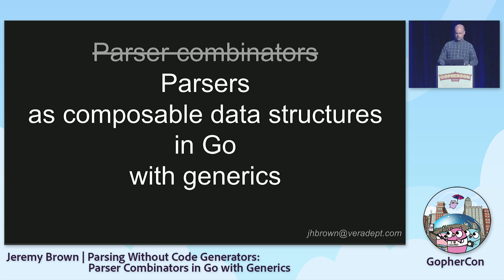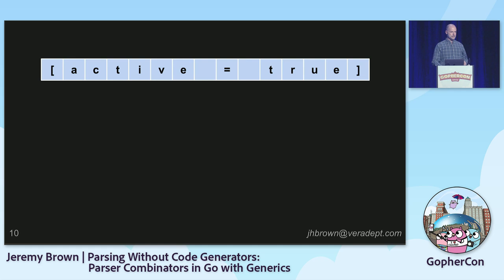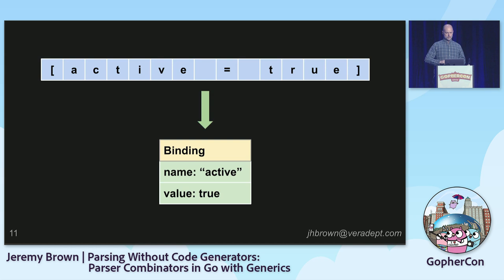Parsing is a field with rich theoretical underpinnings and a large body of literature. With apologies and deep respect to the scholars in the field, I'm not touching any of it. This is a practical talk aimed at people who might want to parse something with a toolbox of this sort. Parsing is fundamentally the act of taking a stream of tokens — bytes or characters that are supposed to represent a data structure — and turning them into that data structure, or ideally telling you what went wrong if the representation was invalid.